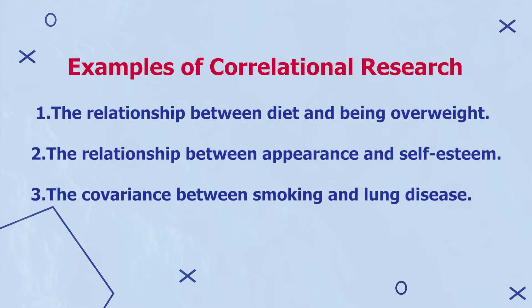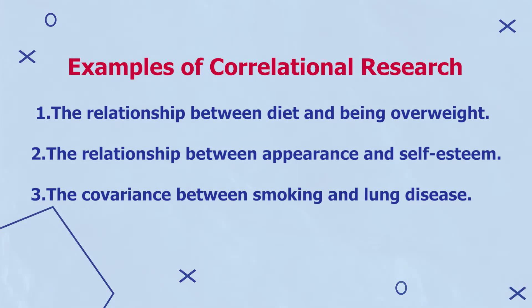Correlational research involves studying the distribution of variables and data. Variables are not manipulated; they are only identified and studied as they occur in the natural setting. Examples of correlational research include the relationship between diet and being overweight, or the relationship between appearance and self-esteem.